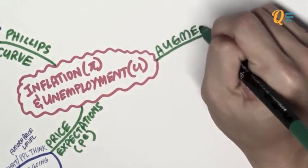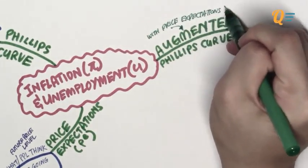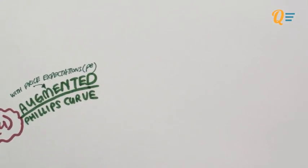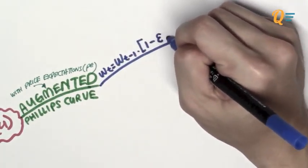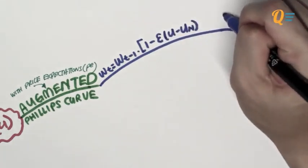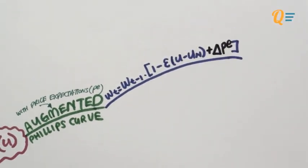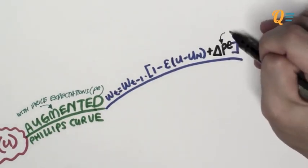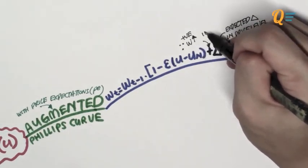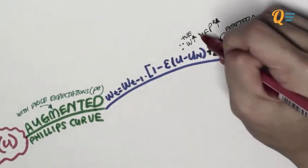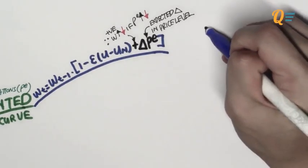To make our model more accurate, we need to incorporate price expectations into the Phillips curve. How do we augment the Phillips curve with price expectations? We take the old Phillips curve equation and add into the bracket terms the expected change in the price level. The rationale behind the positive term is simple: the wage rate increases if people expect prices to increase, and decreases if people expect prices to fall.